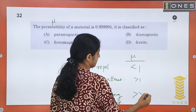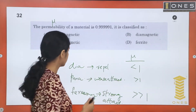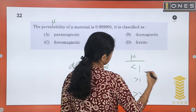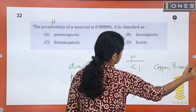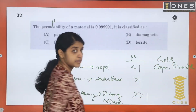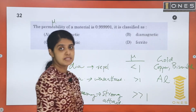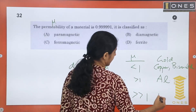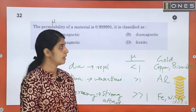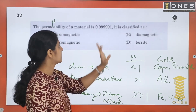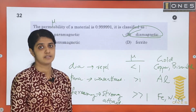For ferromagnetic materials, permeability is very high. Examples of diamagnetic materials include copper, bismuth, gold, and silver. Paramagnetic materials include aluminum. Ferromagnetic materials include iron, nickel, and cobalt. Since the given permeability is 0.9991, which is less than 1, we classify it as a diamagnetic material.